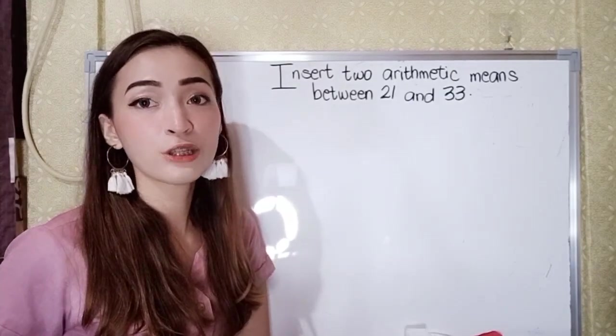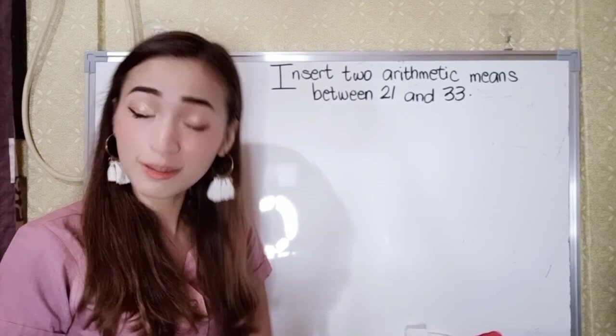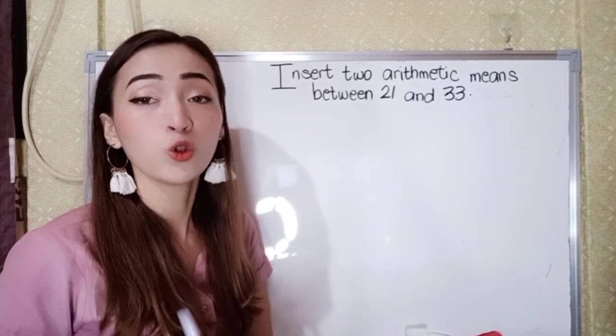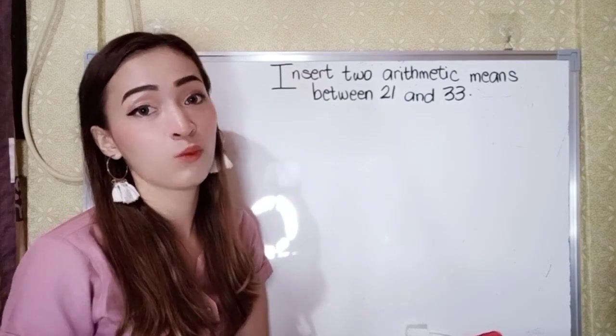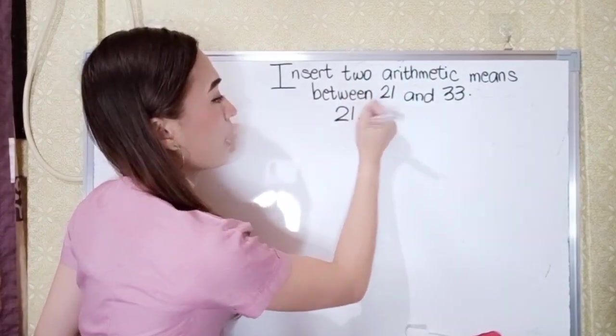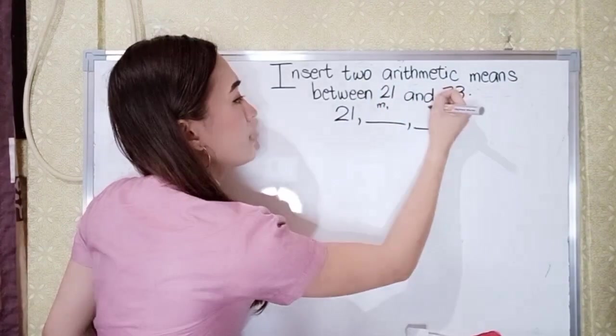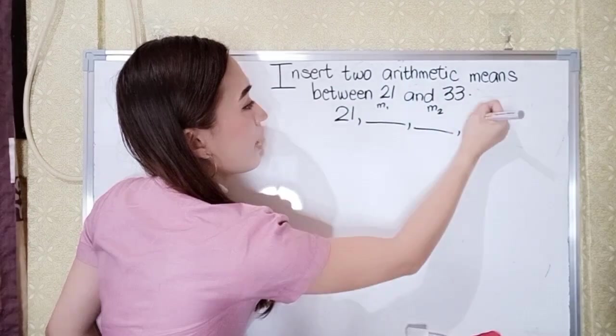For number 2, we have insert 2 arithmetic means between 21 and 33. So that means, what are the 2 numbers between 21 and 33? So that would be 21, so this is our mean sub 1, this is our mean sub 2, and then 33.